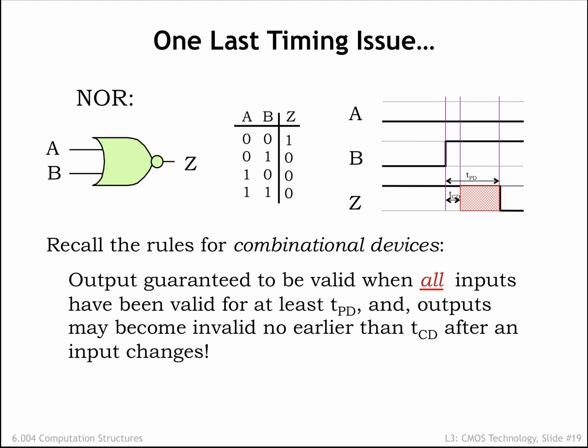Now let's consider a different setup, where initially both A and B are 1, and appropriately the output Z is 0. Examining the truth table, we see that if A is 1, the output Z will be 0 regardless of the value of B. So what happens when B makes a 1 to 0 transition? Before the transition, Z was 0, and we expect it to be 0 again TPD after the B transition.